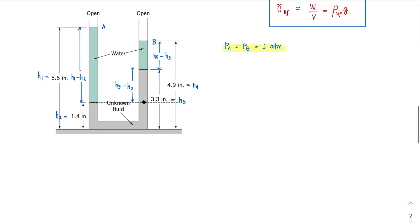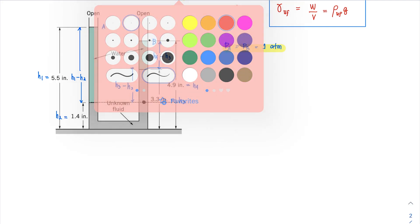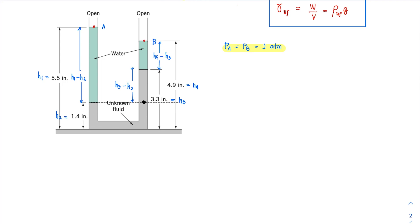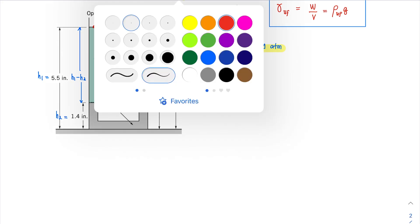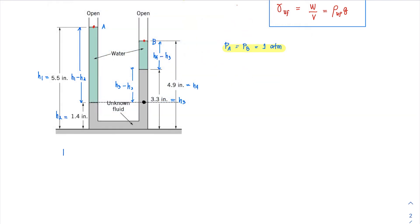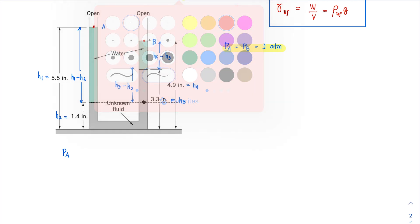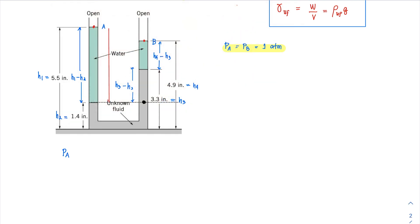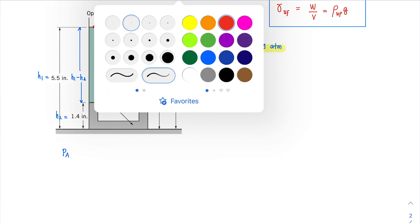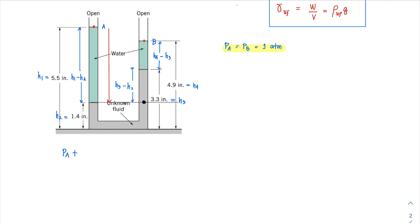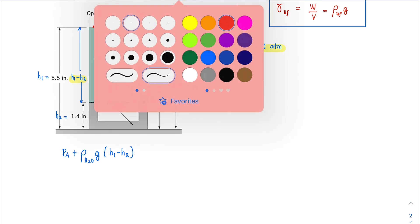We are now ready to add up all pressures leading to the static case. You can start at either point A or point B — I prefer to start at point A. Starting at A, I add Pa. Then moving downward through water to the bottom interface, the pressure increases, so I add the density of water times g times the height (h1 minus h2). That is why we solved for the heights first.